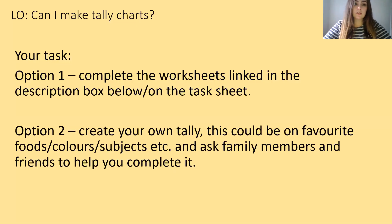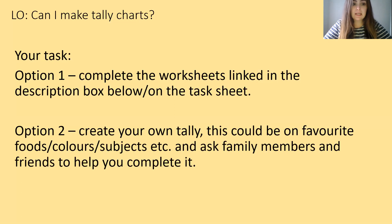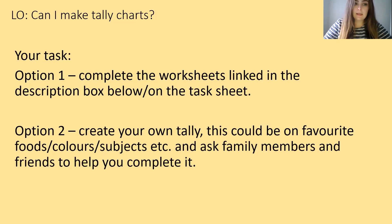Now your task. There are two tasks that you can choose to complete — you can either do one or the other, or if you'd like to do both you're more than welcome to. Option one is to complete the worksheet linked in the description box below this video, and it's also on the parent task sheet. Option two is to create your own tally — this could be on your favourite foods, colours, subjects, whatever — and ask family members and friends to help you complete it.